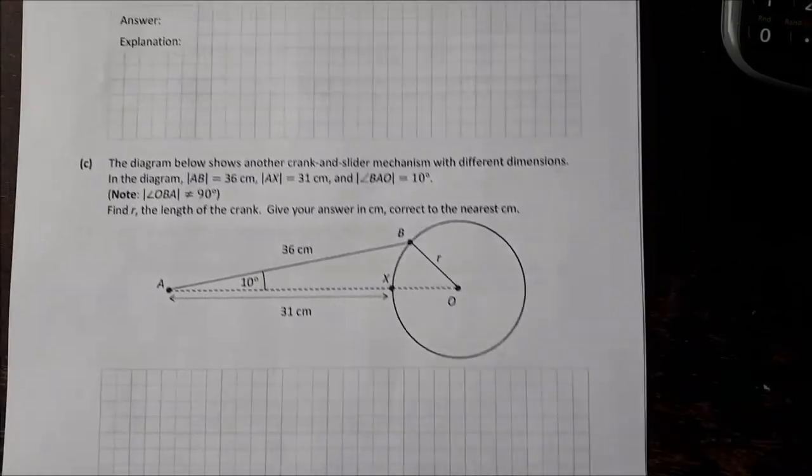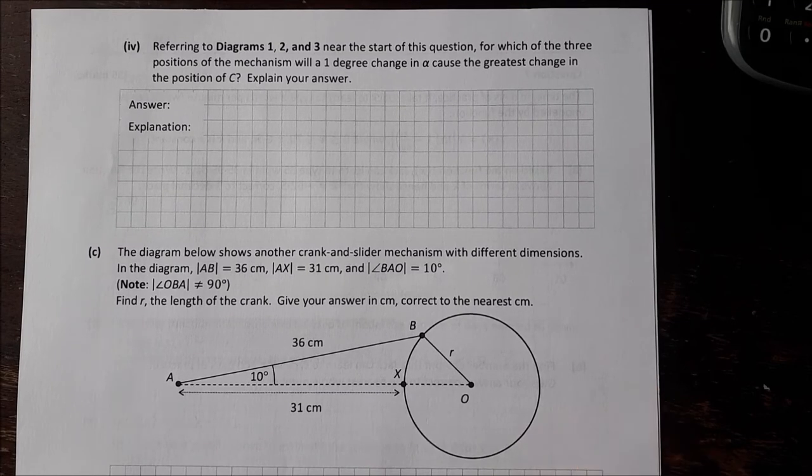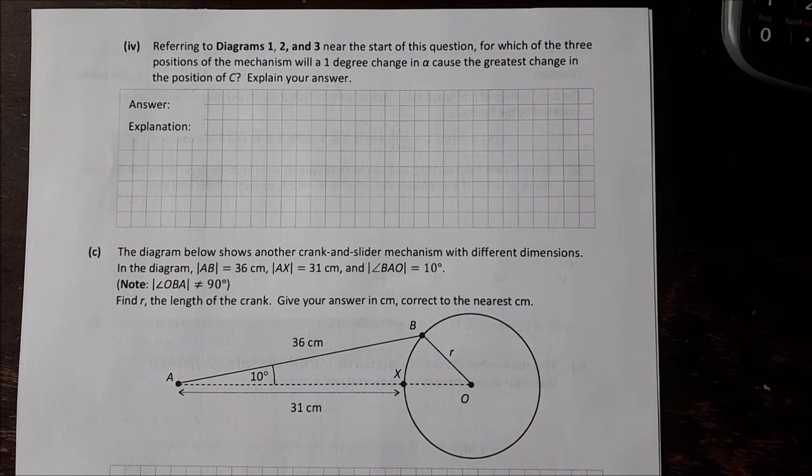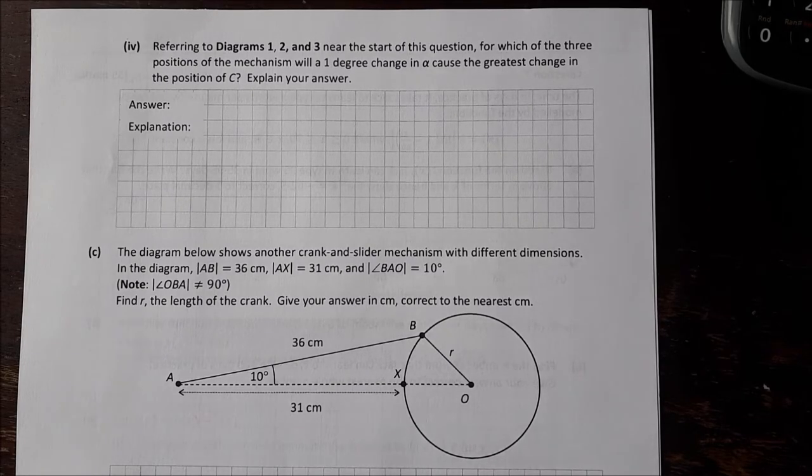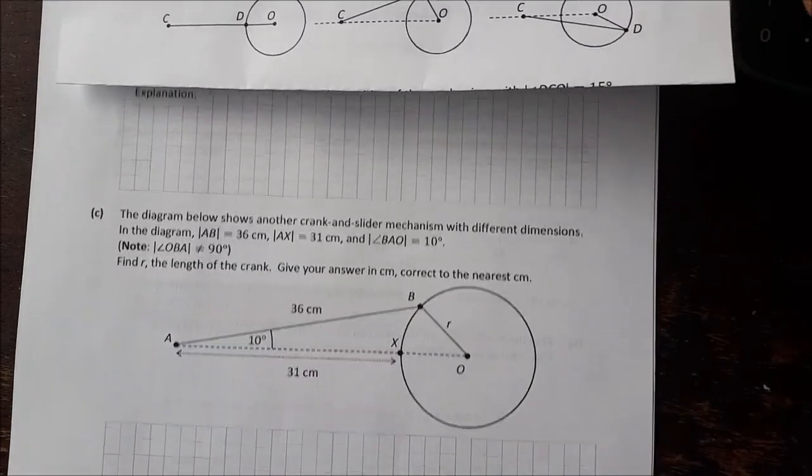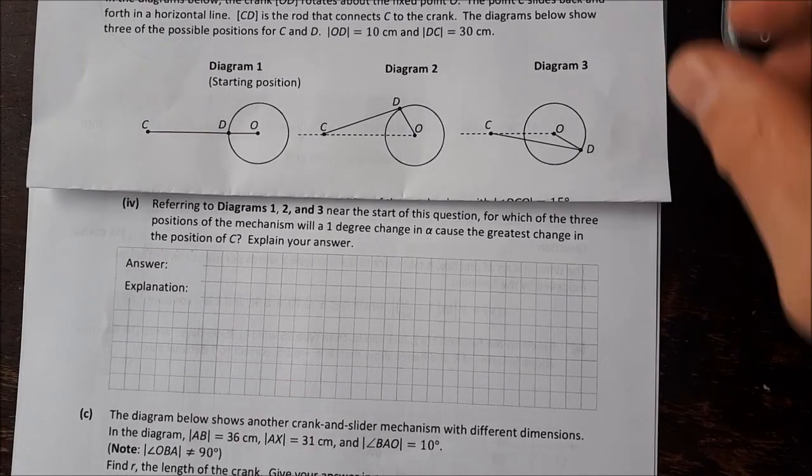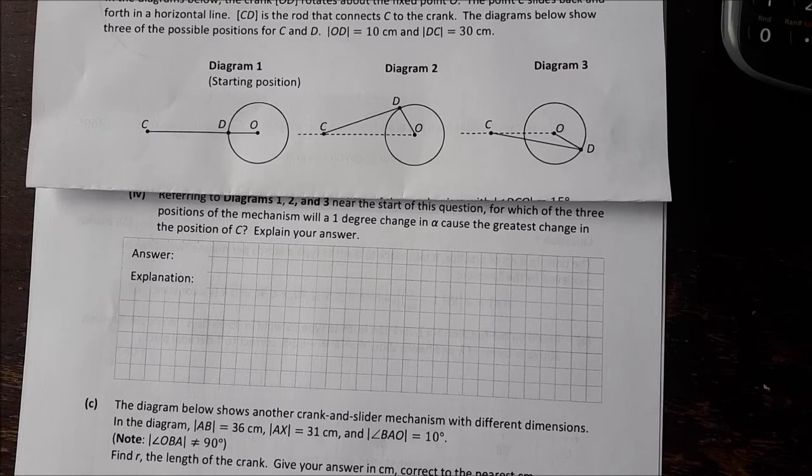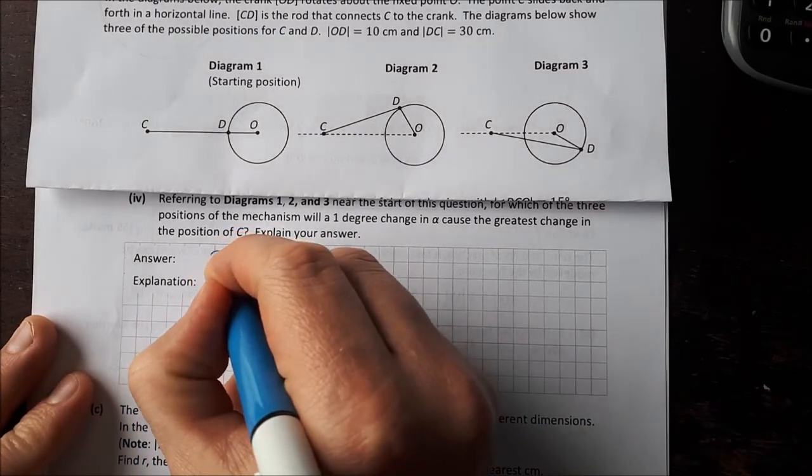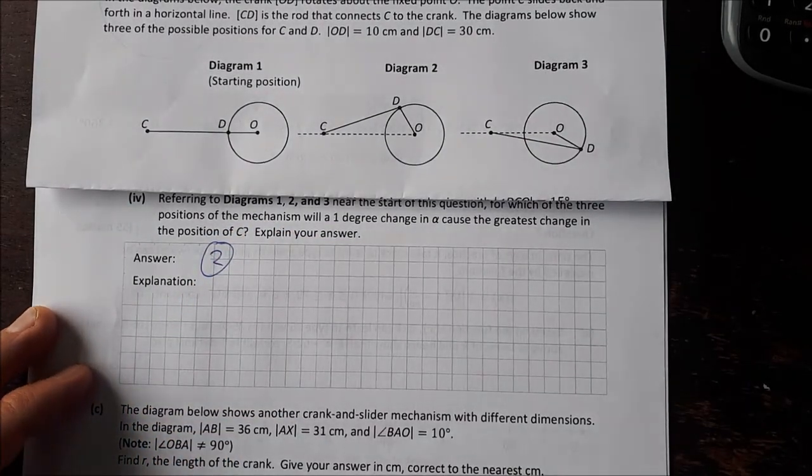Over to the next part, final part of this question, part 4. Referring to diagrams 1, 2 and 3 near the start of this question, for which of the 3 positions of the mechanism will a 1 degree change in alpha cause the greatest change in the position of C, and explain your answer. For this I've got the diagrams here that we can look at them a little bit closer. The answer I'm going to tell you is diagram 2, and let me try and explain why.